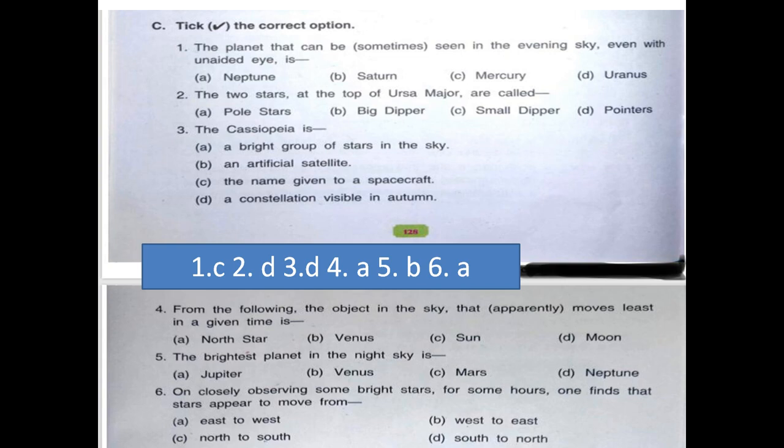Question number four. From the following, the object in the sky that apparently moves least in the given time is North star, Venus, sun and moon. And our answer is North star.